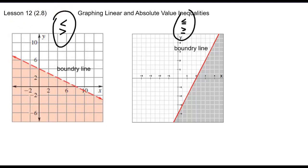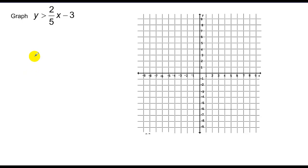So what I want to do is graph y is greater than 2/5x minus 3. This is just a line. I go to negative 3, put a dot, go up 2 over 5, and go up 2 over 5 again. Instead of just connecting the dots, I'm going to draw them in a dotted fashion because this is strictly greater than.